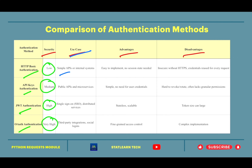For use cases: Basic Authentication is used in simple or internal APIs. Public APIs generally use API Key Authentication. JWT is mainly used in SSO applications and distributed services — you log in once and use the JWT token to access all different applications in an organization. OAuth is used in third-party integrations and social logins.